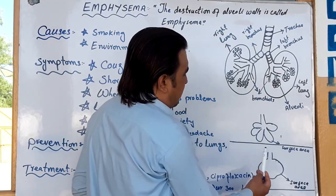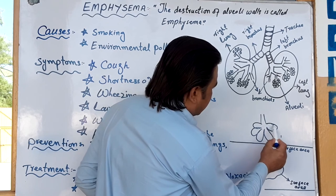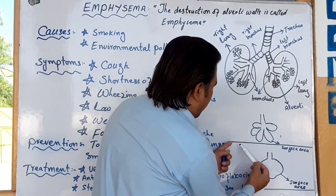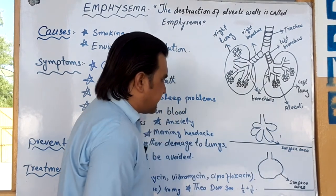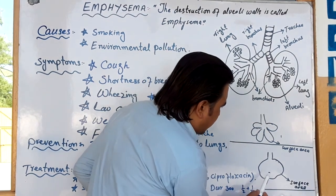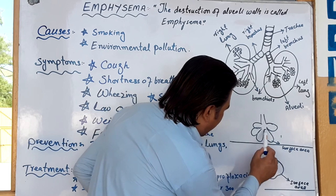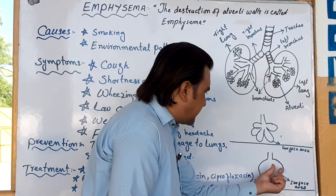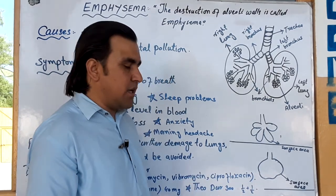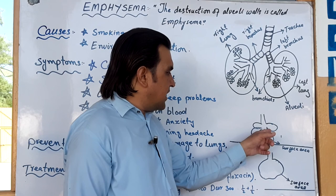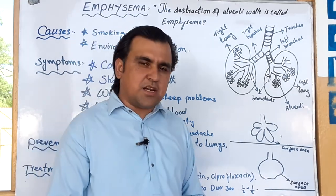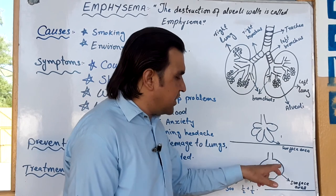In a normal situation, the surface area is larger. But in Emphysema, due to destruction of alveoli, the surface area is decreased by around 2% or more. As more destruction occurs, surface area decreases and volume increases, reducing the efficiency of gas exchange.